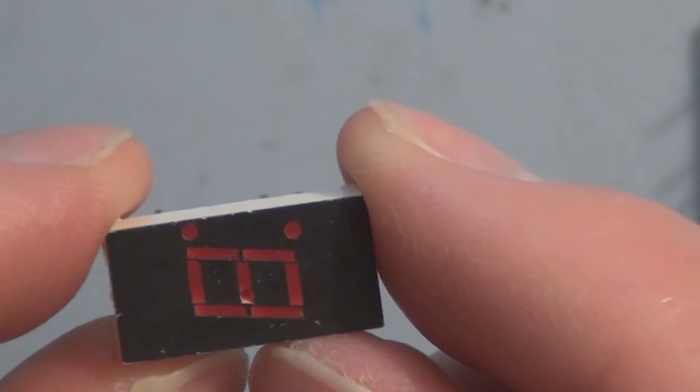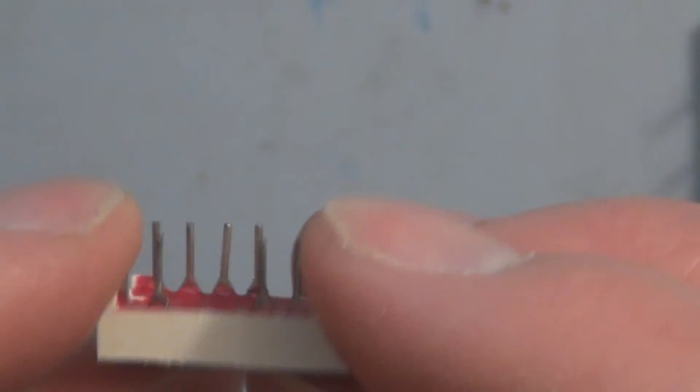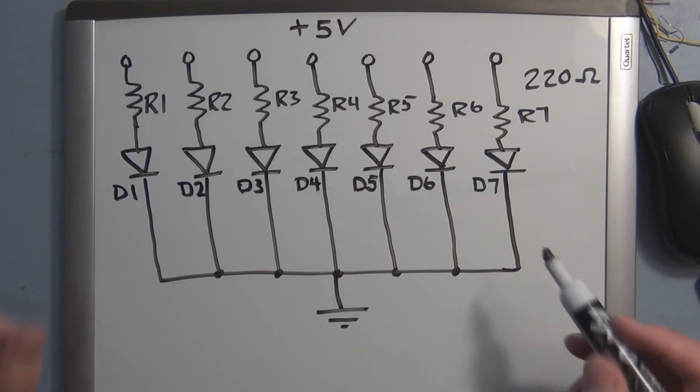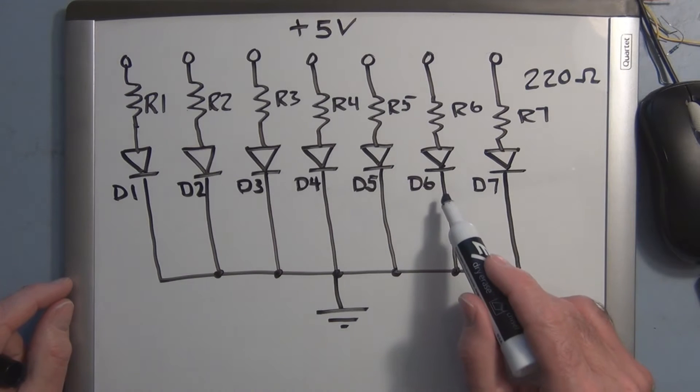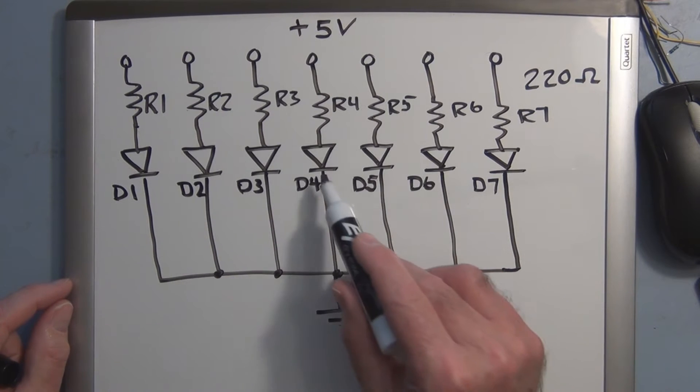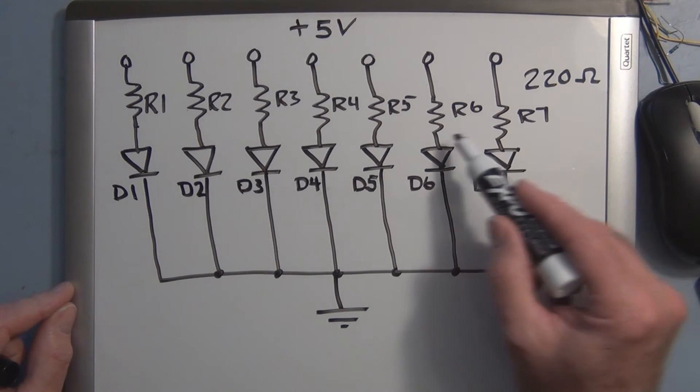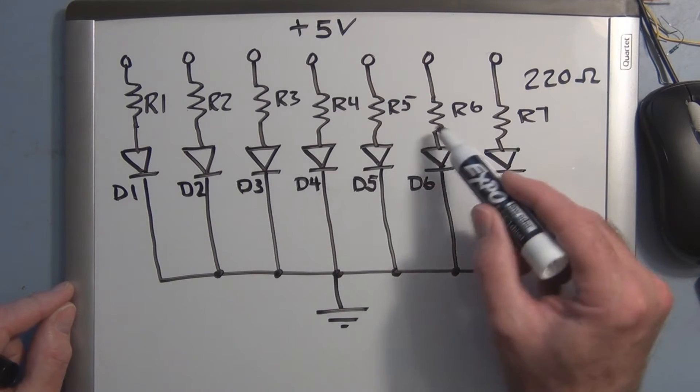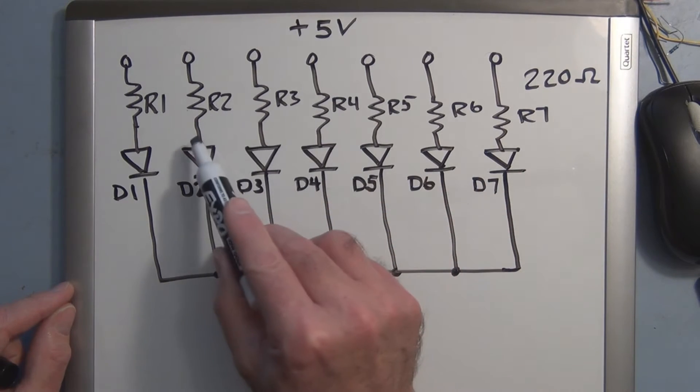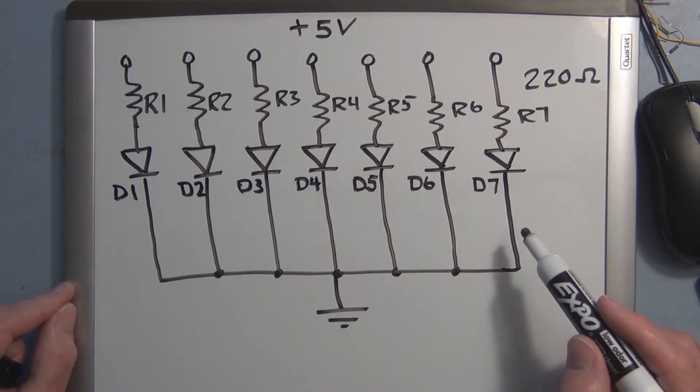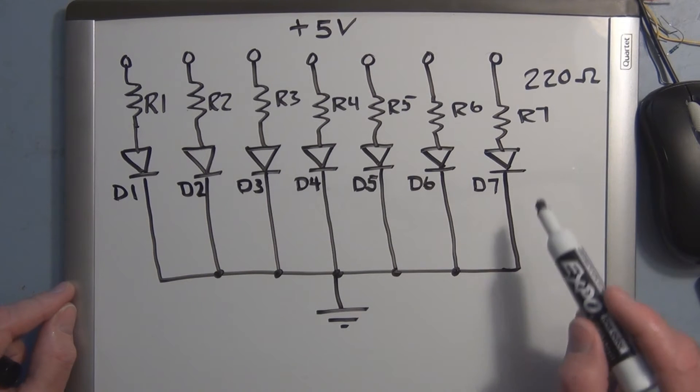Like right here, you see a little pinhole—that one burned out from too much current. So here are seven diodes that you would find in one of these seven segment displays.